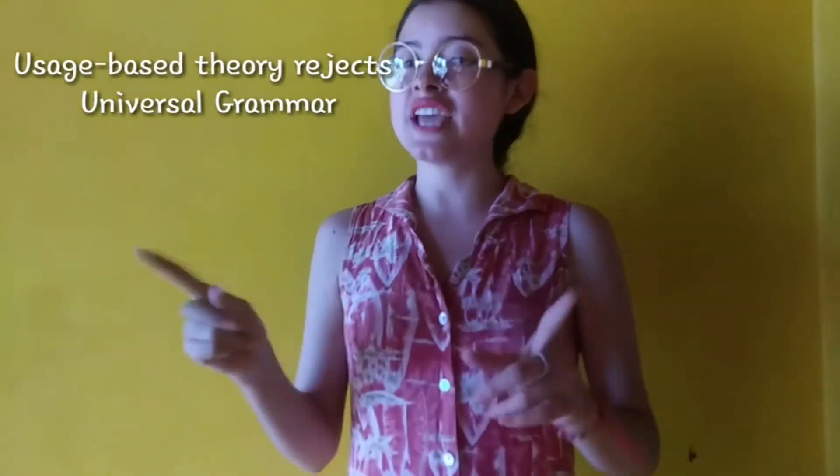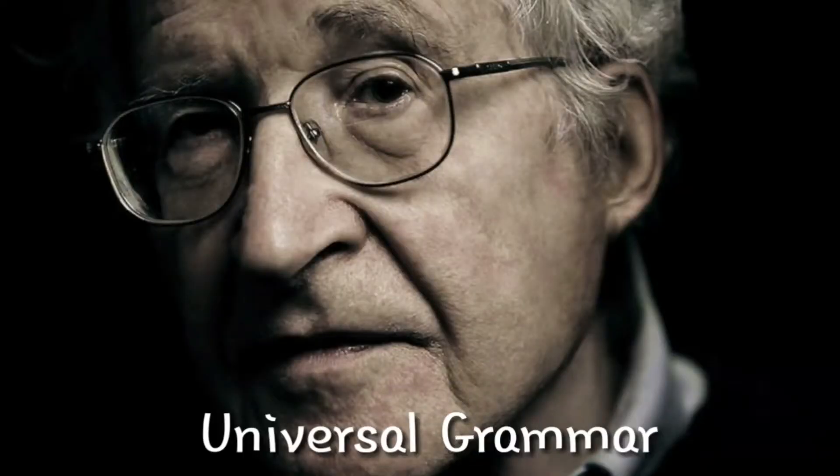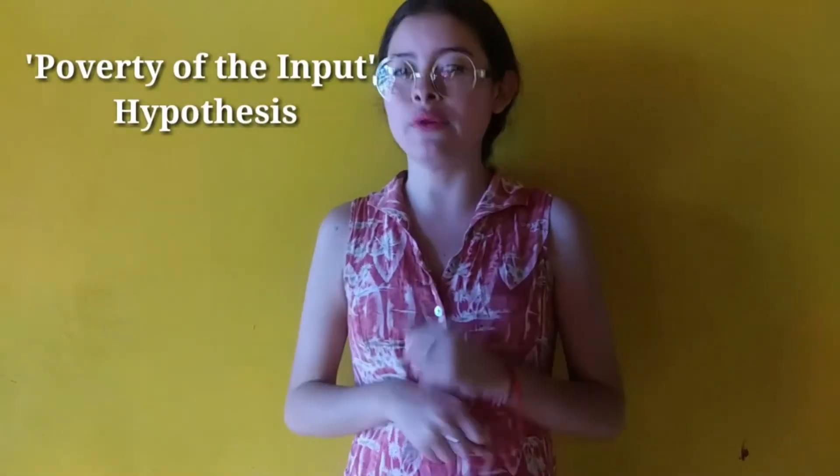Usage-based theory rejects the idea of universal grammar. Universal grammar is the idea that humans are born with a language blueprint made up of general principles of language that guides the development of a child's mother tongue. The argument made by Chomsky is that infants or children need to be born with this language blueprint because they don't have the cognitive skills to grasp the abstract grammar of their own languages, and they don't receive the right kind of language input to work out the rules for themselves — what's called the poverty of the stimulus hypothesis.